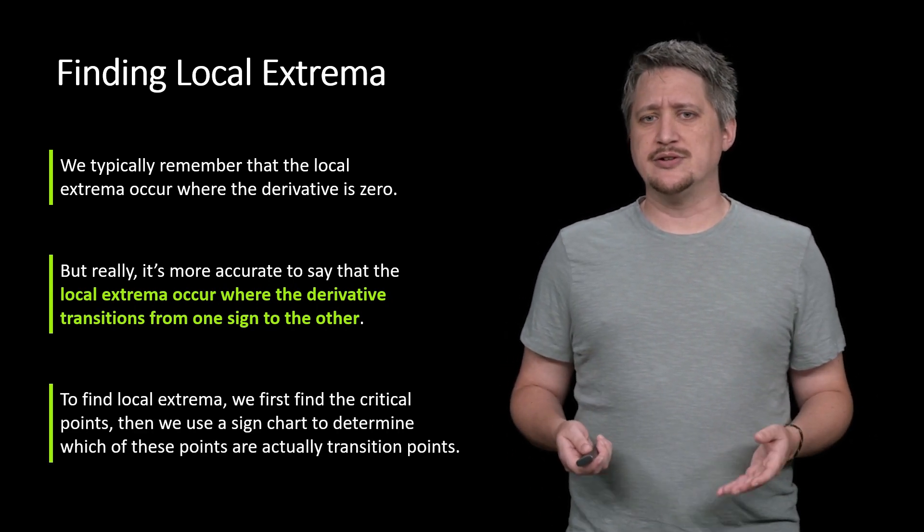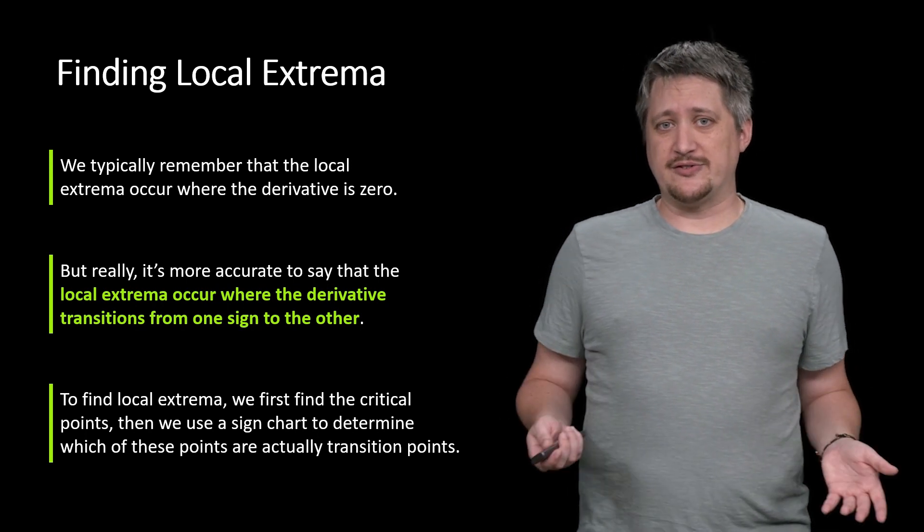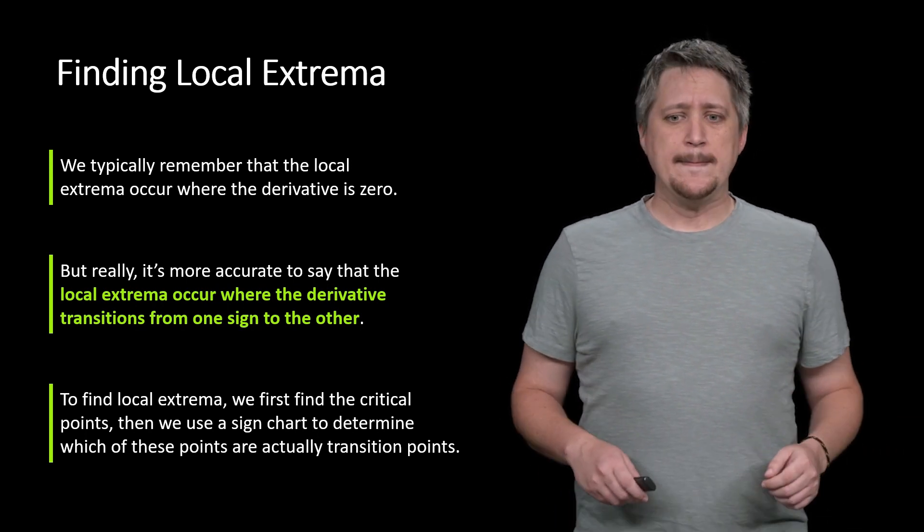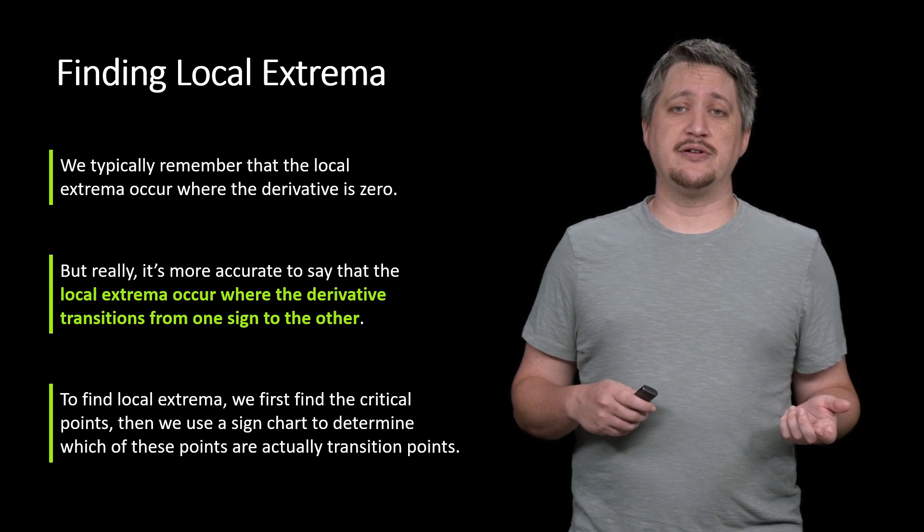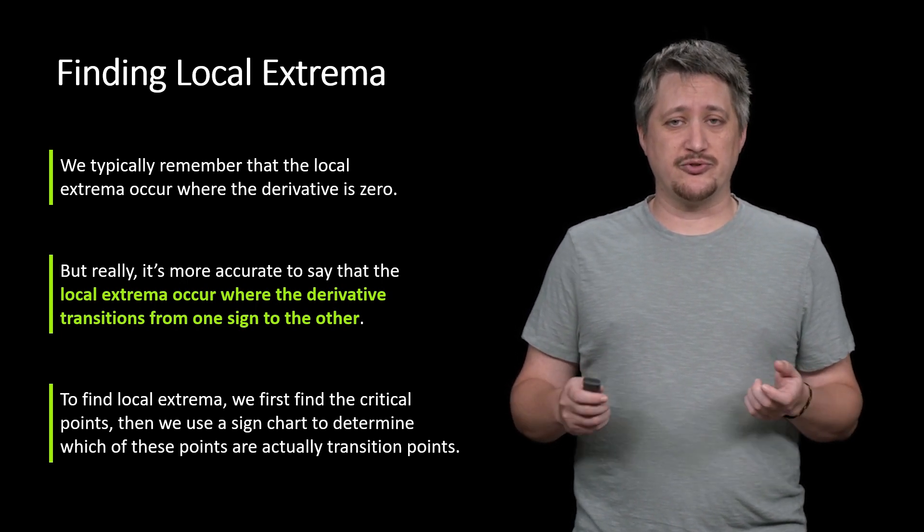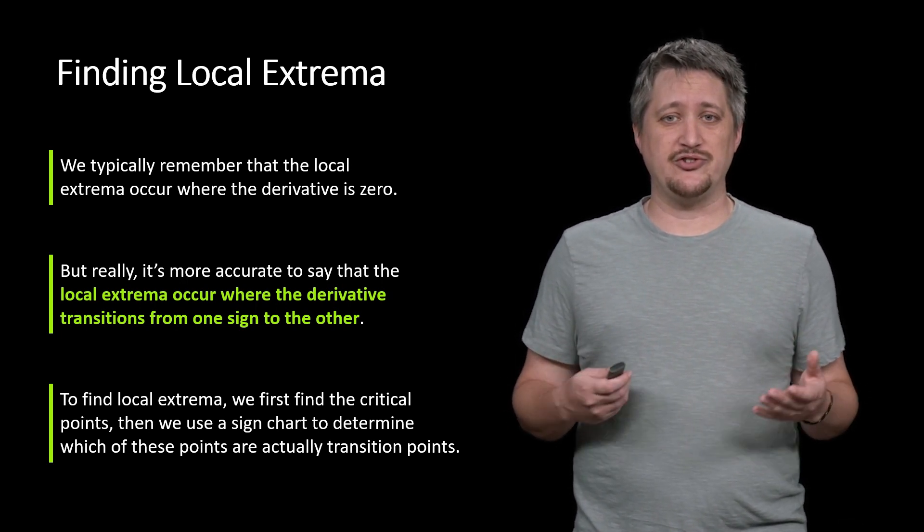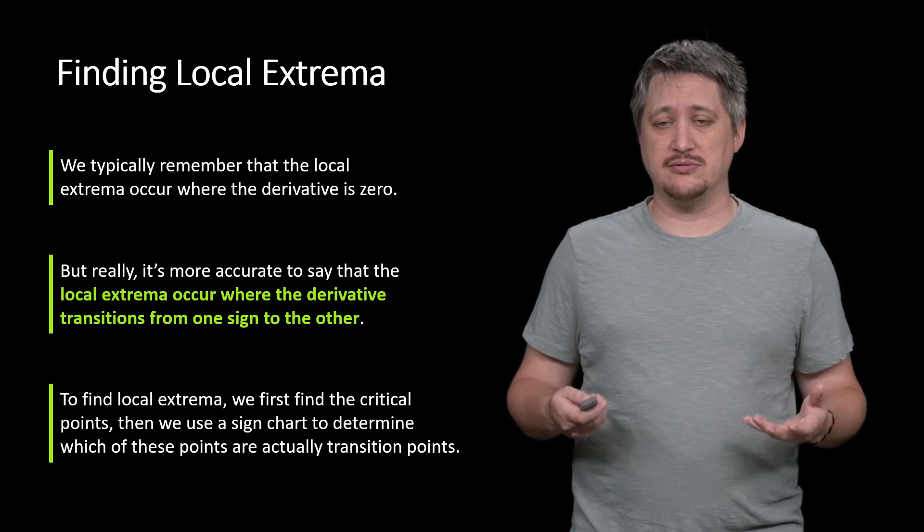So to find local extrema, you do want to find the critical points, because that's where they have the potential to occur. But then we want to use a sign chart to kind of tell which of those critical points are actually transitioning from one sign to the other, and thus our local extrema.